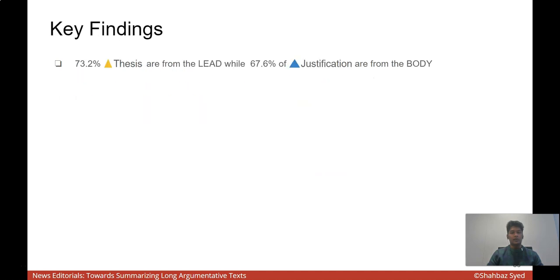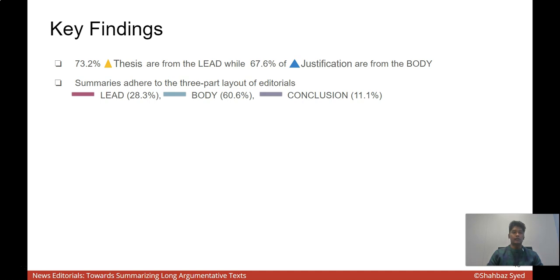With all of these data, we perform several analysis and I present some key findings from this. The first is about thesis and justification. We found out that majority of the thesis segments come from the lead while majority of the justifications are from the body. Most of the editorials in our data source in fact introduce the topic in the lead section. However, according to our definition, just selecting the thesis is not sufficient for a high quality summary. It should also be sufficiently justified. This is where we see the three-part layout of the editorials also reflected in the summaries where we have specific contributions from each of the discourse part: lead, body, and conclusion.